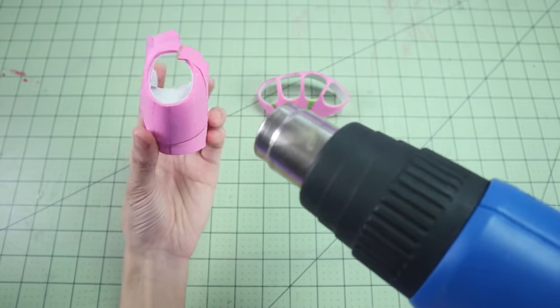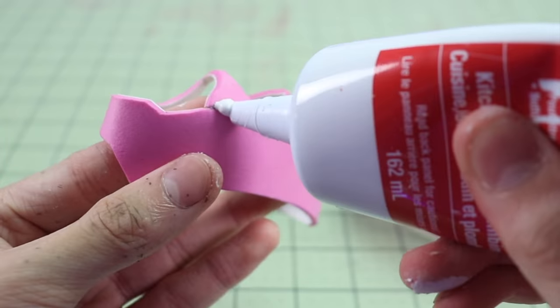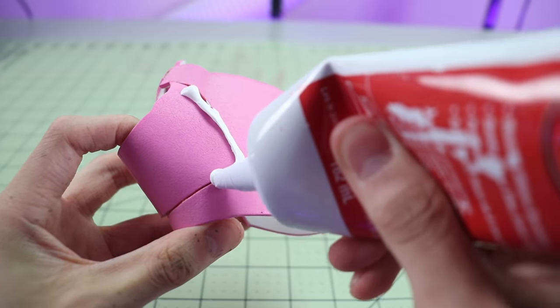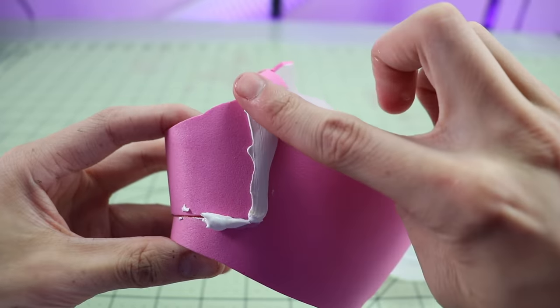Once again, I used a heat gun to heat seal the foam, and then after that I filled in all the gaps with some more Quick Seal. After the Quick Seal dried, I painted these pieces the same way I painted the fingertips.